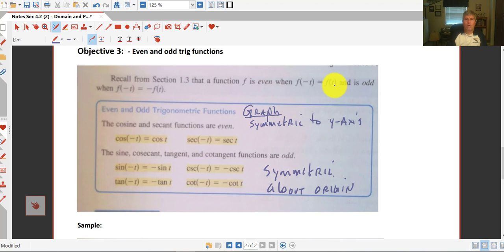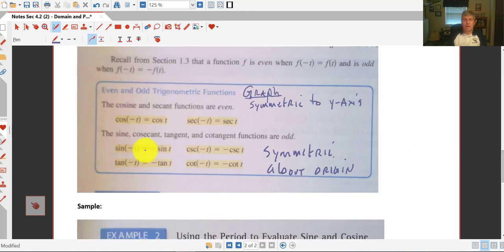So cosine and secant, cosine and its reciprocal, those are even functions. They're going to be symmetric to the y axis. And then sine and its reciprocal cosecant and tangent and its reciprocal cotangent. Those are odd functions. Graphically they're going to be symmetrical about the origin, but those functions are odd.